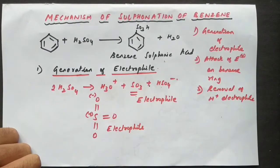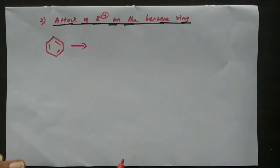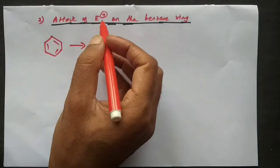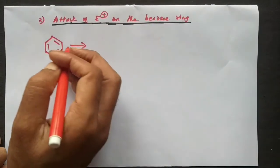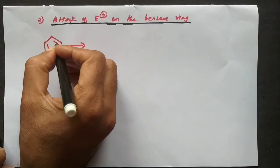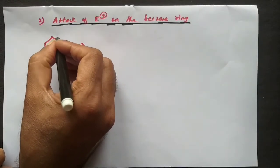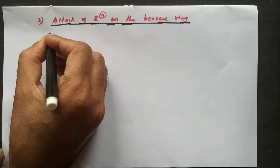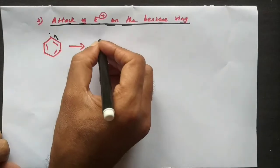Next step will be the attack of electrophile on the benzene ring. I told you in case of benzene ring what happens is one of the pi bonds, the two electrons move towards this carbon making this carbon negative and this carbon positive.